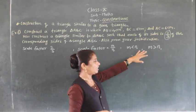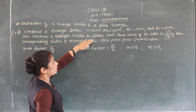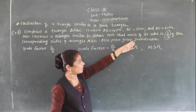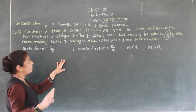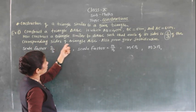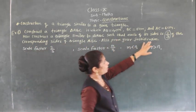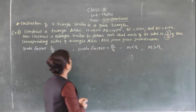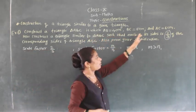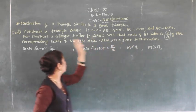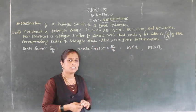We will see these conditions with the help of examples. First, construct triangle ABC in which AB equals 4 cm, BC equals 5 cm, and AC equals 6 cm. We have to construct a similar triangle to ABC where the scale factor — the ratio of corresponding sides — is 2/3.